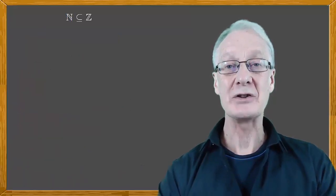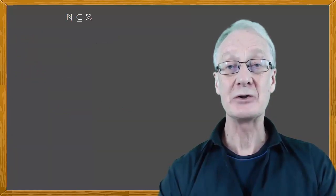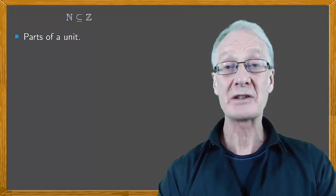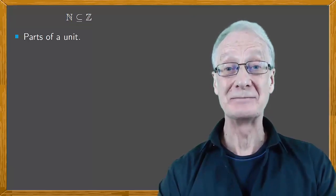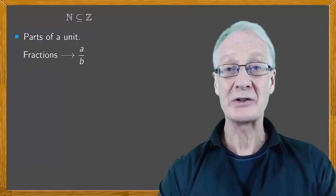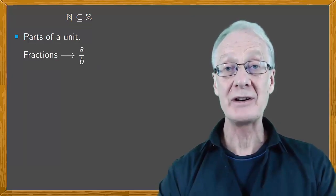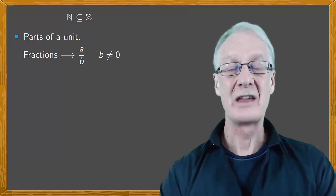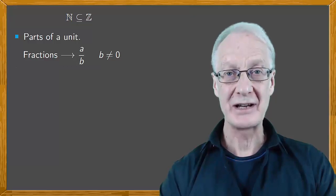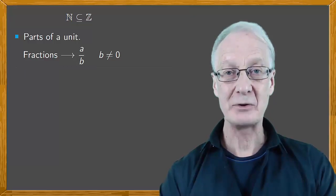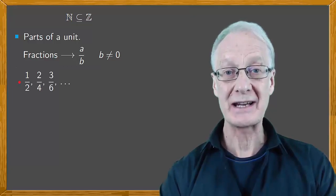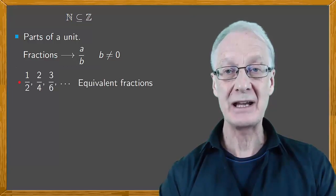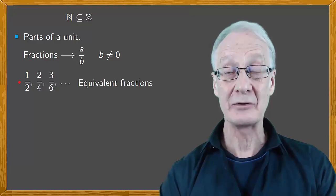Now, ever since ancient times, people have realized that you sometimes need to talk about parts of a unit. Think of it this way: you don't always feel like eating a whole pizza. So we have to deal with fractions, both positive and negative. Over time, mathematicians agreed not to allow fractions to have a denominator of zero, because it turns out that leads to all kinds of problems. There's also the issue of different looking fractions that amount to the same thing. For example, a half, two quarters, and three sixths. These are said to be equivalent, because they can all be cancelled down to the same fraction.